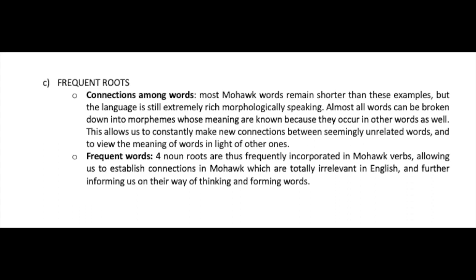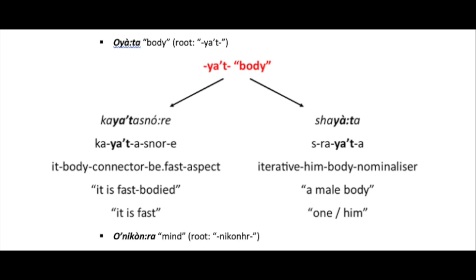Four noun roots are frequently incorporated in Mohawk verbs, allowing us to establish connections and further informing us on their way of thinking. The first is 'ojada' meaning body, whose root is found in 'gajada' (it is fast) and 'sajada' (someone, him).